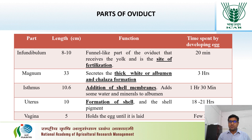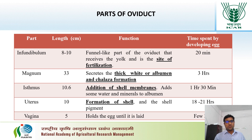The next part is the isthmus. It is the narrow portion, around 10 to 11 cm in length, and the major function is the addition or formation of the shell membranes. It also adds water and minerals to the developing egg, and the developing egg stays around 1 hour 30 minutes in the isthmus.